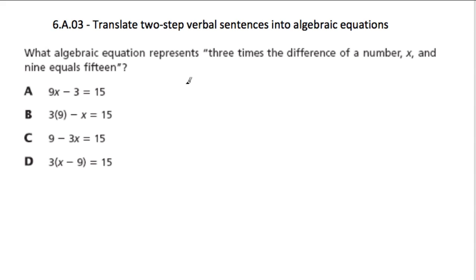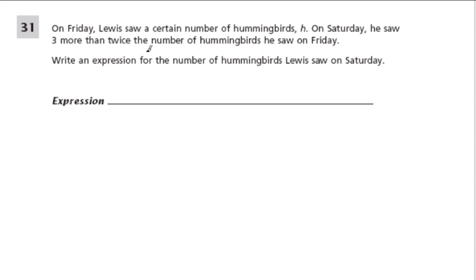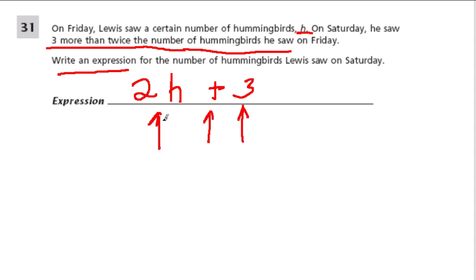And here's another one. We'll do this one first. On Friday, Lewis saw a certain number of hummingbirds h, so that's our variable again. On Saturday, he saw three more than twice the number of hummingbirds he saw on Friday. Write an expression for the number of hummingbirds. So we don't need an equation, we don't need an equal sign, just an expression. So h is our hummingbirds. And he saw three more than twice the number of hummingbirds that he saw on Friday. So three more than twice the number of hummingbirds. And that, believe it or not, is pretty much our approach to algebra in sixth grade right now.